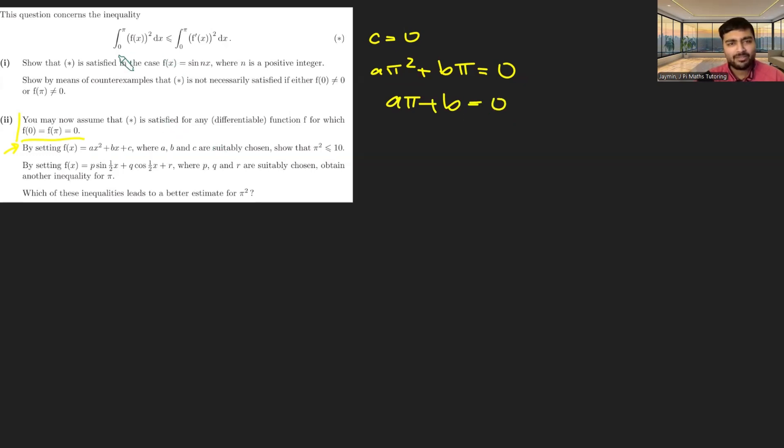But we can actually go one step further. If I look at this inequality here, I notice that if I multiply f by a constant number, let's say 10, I'd get an extra factor of 100 on the left side. But on the right side, I'd also get an extra factor of 100. So I can scale these functions f(x) up and down as I please. So here I can assume without loss of generality that a just equals one. And so I have π + b = 0. And so b is minus pi.